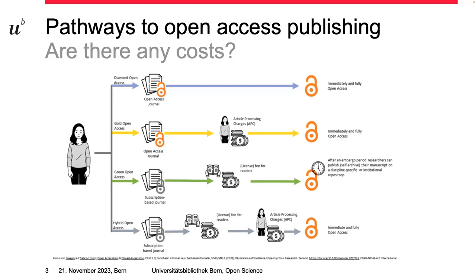There are no costs for the readers, but there can be costs for the authors. The other two pathways are called gold and diamond, meaning to publish in a fully Open Access journal. There are no costs for the readers, but costs for the authors with the gold route — there are APCs, article processing charges, to be paid. When taking the diamond route, there are neither costs for readers nor for authors, because the journals fund their expenses, for example, by community funding.